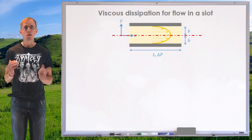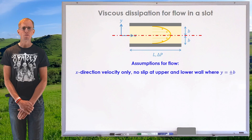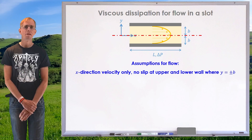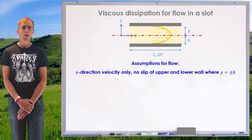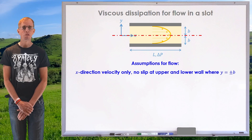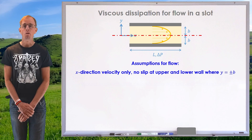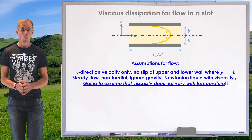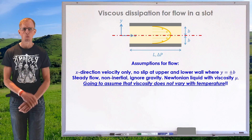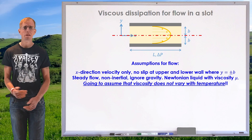I've got a length l and across that length l there is a pressure drop delta p. For the flow I'm assuming an x-direction velocity only, that velocity field varies with y only, and the walls represent stationary boundaries — so velocity is zero at y equals plus or minus b. I'm also assuming steady flow, essentially non-inertial flow with small Reynolds numbers, so laminar flow, and a horizontal geometry so I'm ignoring gravity.